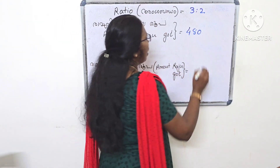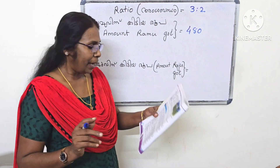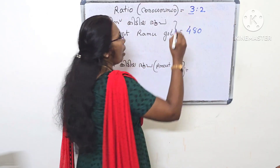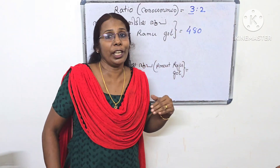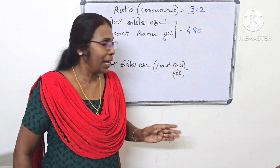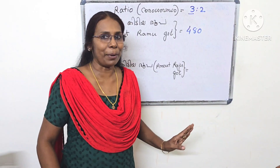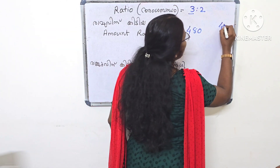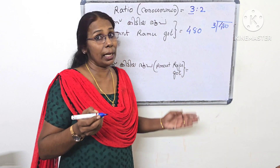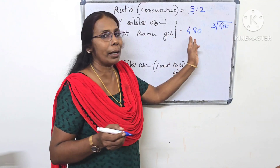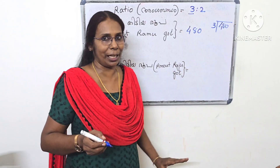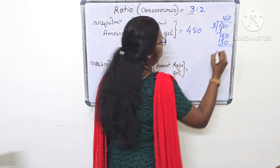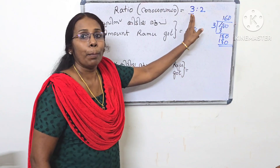Dhamu got 480 rupees which equals 3 parts. So one part equals 480 divided by 3, which is 160 rupees. We know that 3 parts equals 480, so 1 part equals 160.